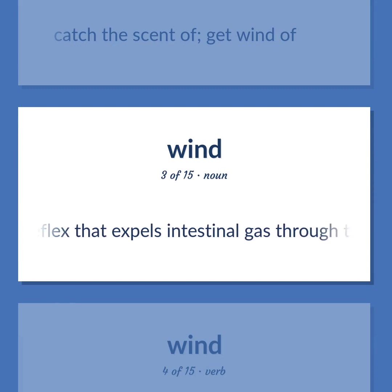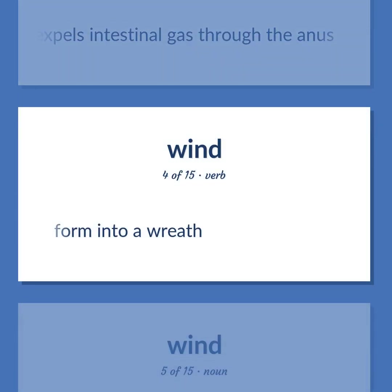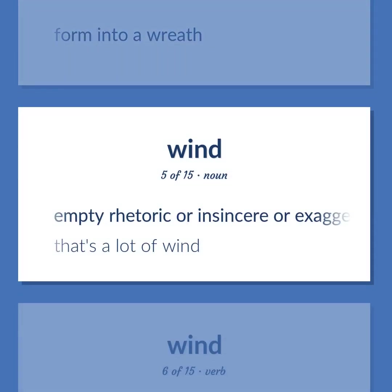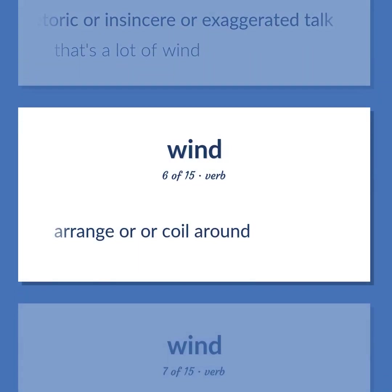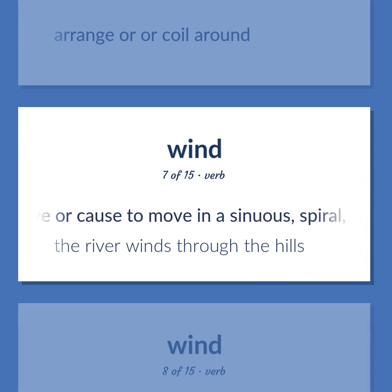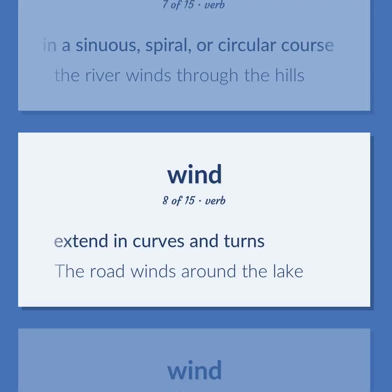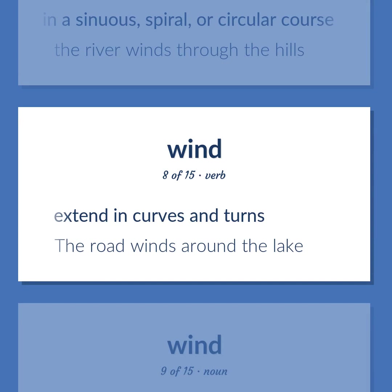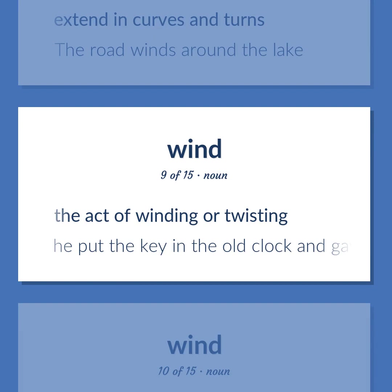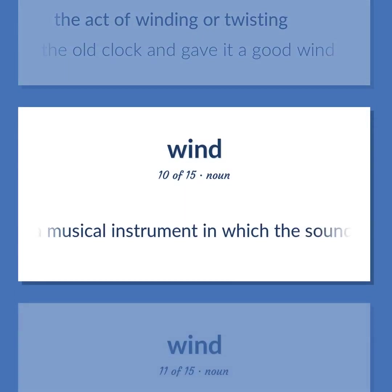WIND: A reflex that expels intestinal gas through the anus. Form into a wreath. Empty rhetoric or insincere or exaggerated talk — that's a lot of wind. Arrange or coil around. To move or cause to move in a sinuous, spiral, or circular course — the river winds through the hills. Extend in curves and turns — the road winds around the lake. The act of winding or twisting — he put the key in the old clock and gave it a good wind. A musical instrument in which the sound is produced by an enclosed column of air moved by bellows or the human breath.